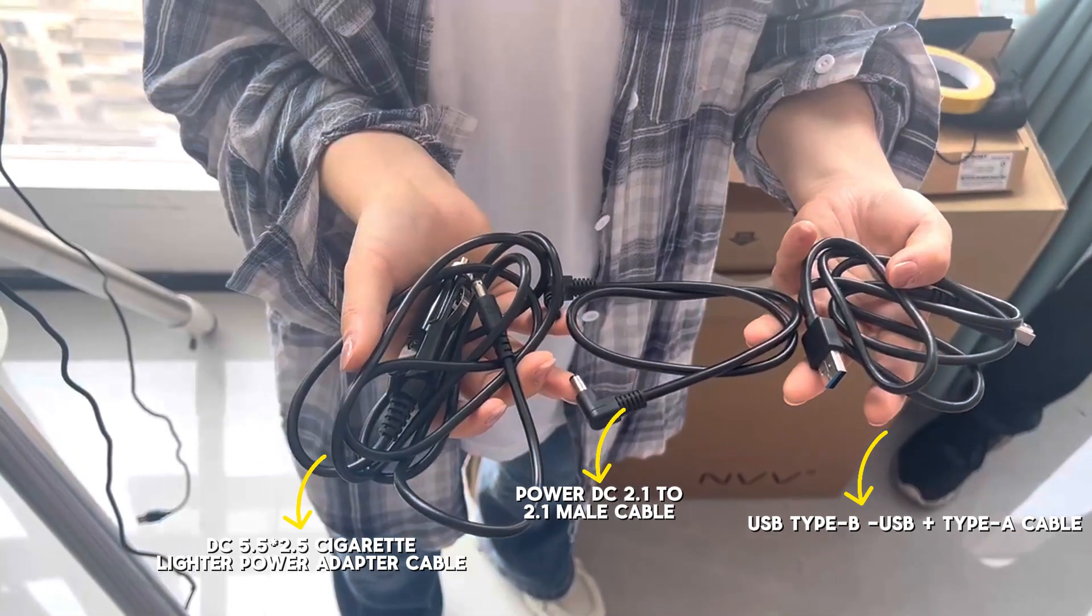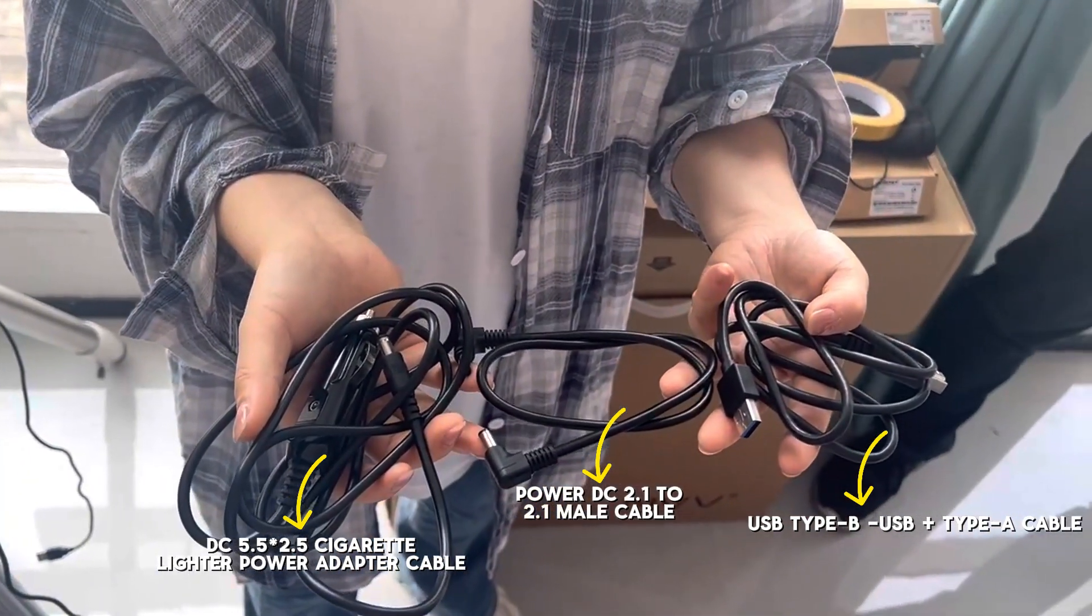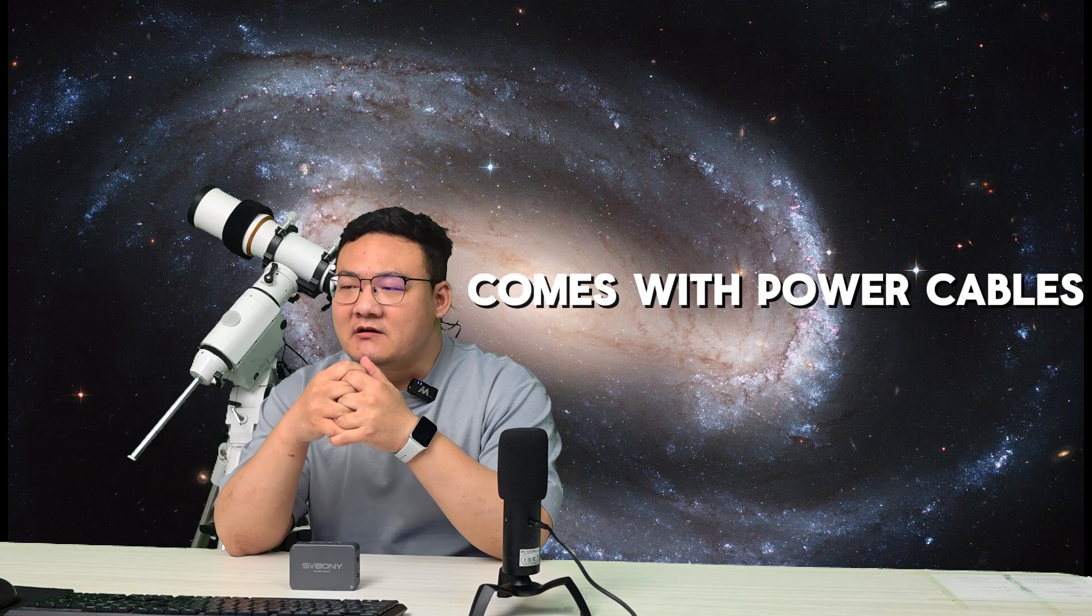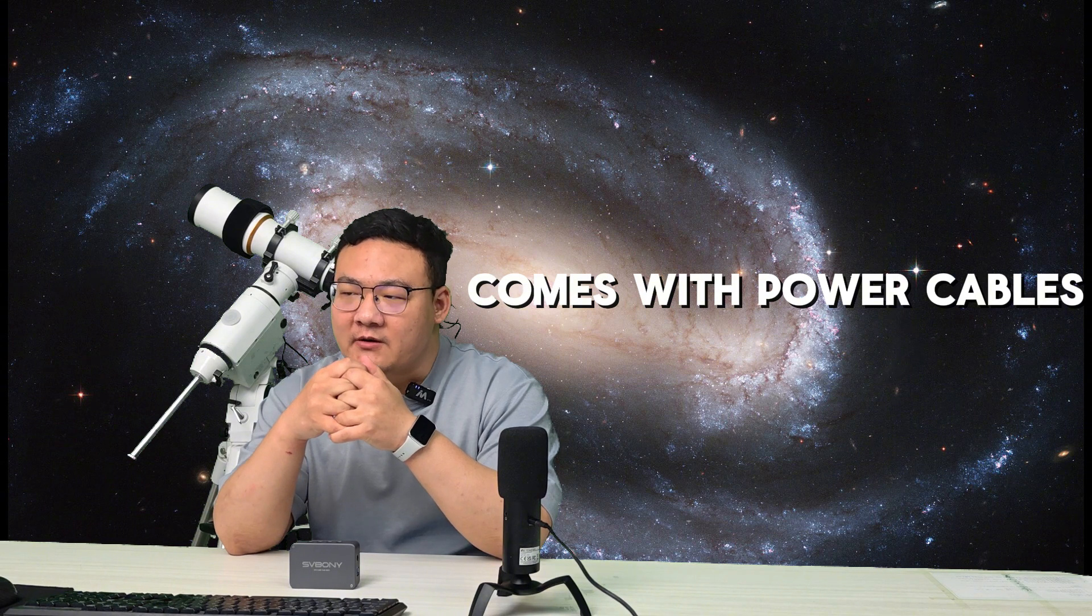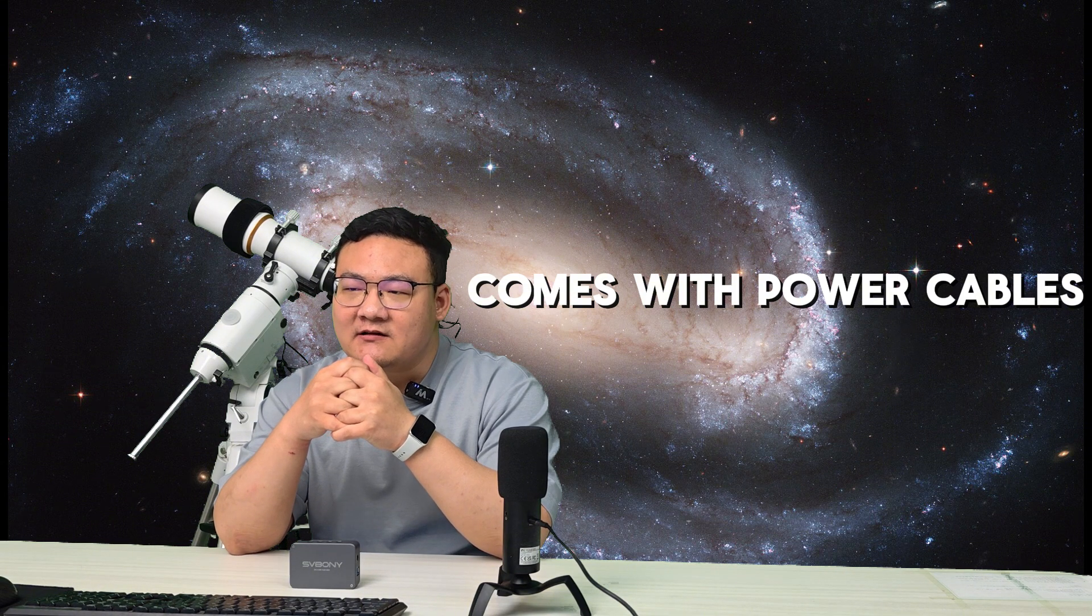Inside the box, you will find one Type-B and one Type-A cable, a DC 2.1 to 2.1mm cable, and a cigarette lighter power adapter. We've included this to make things easier for every SV241 user.